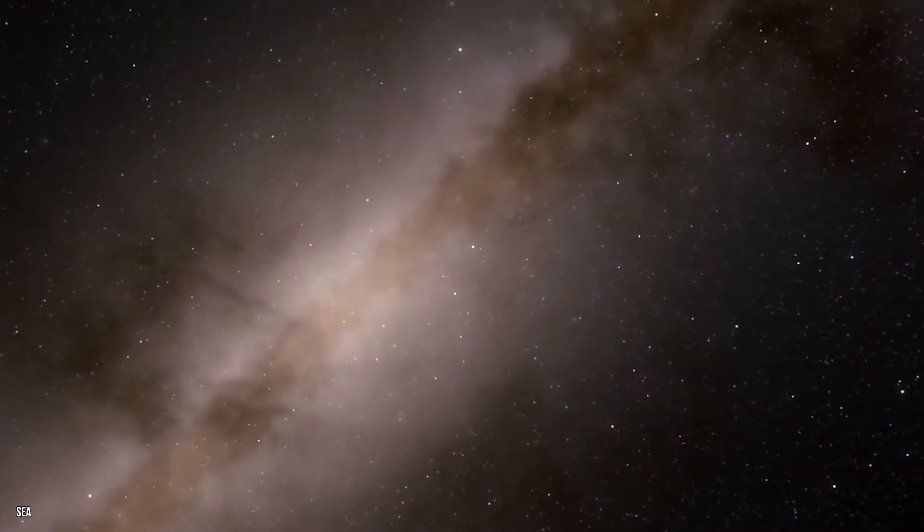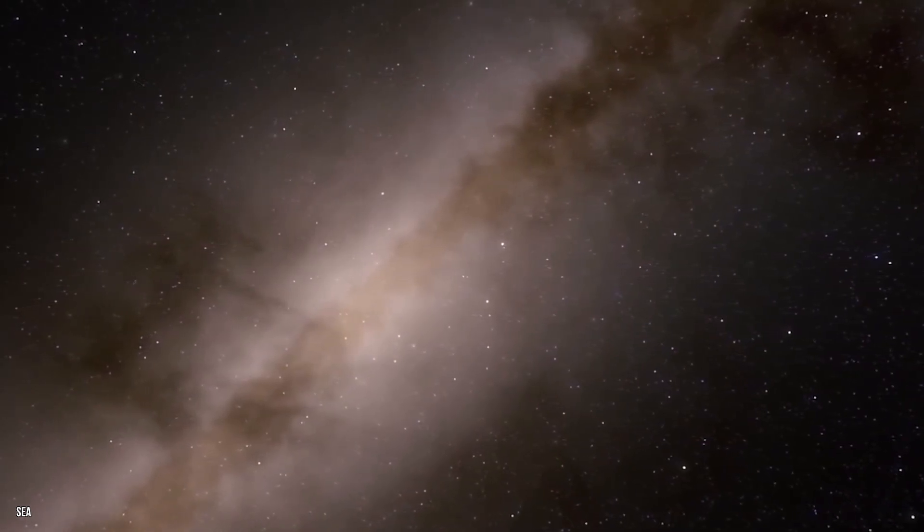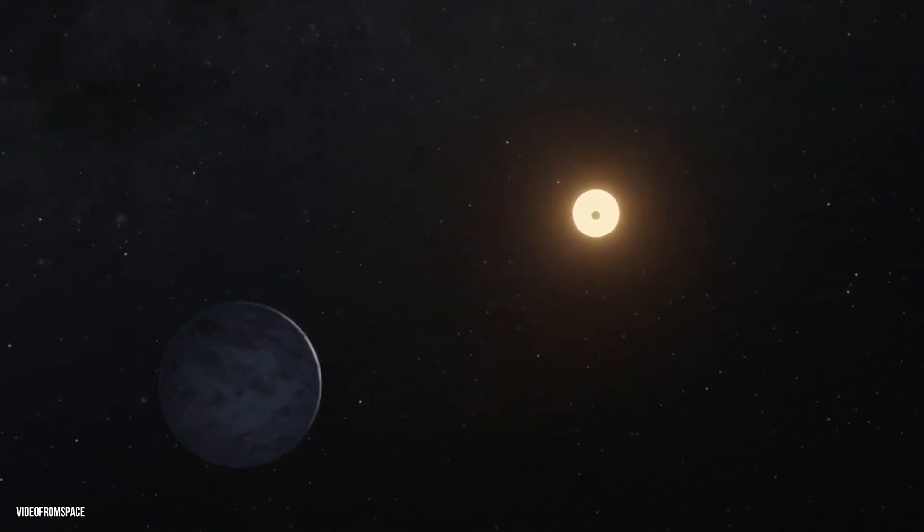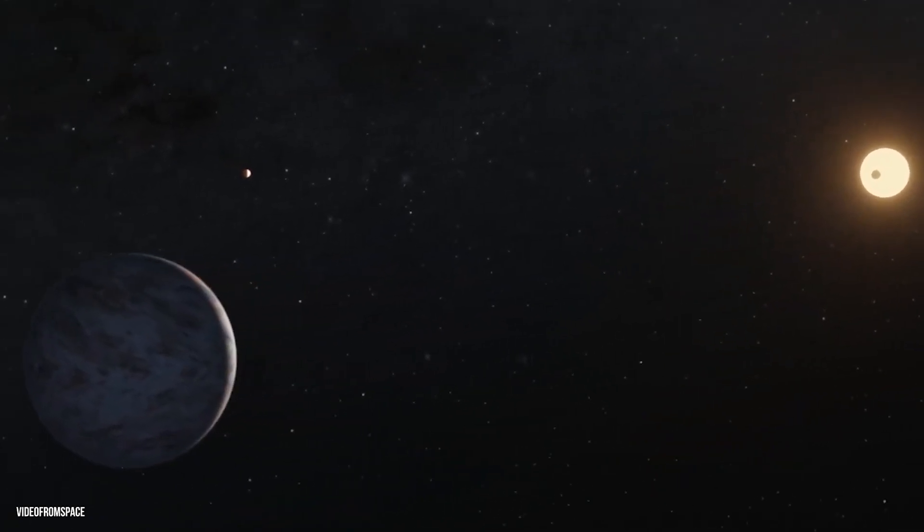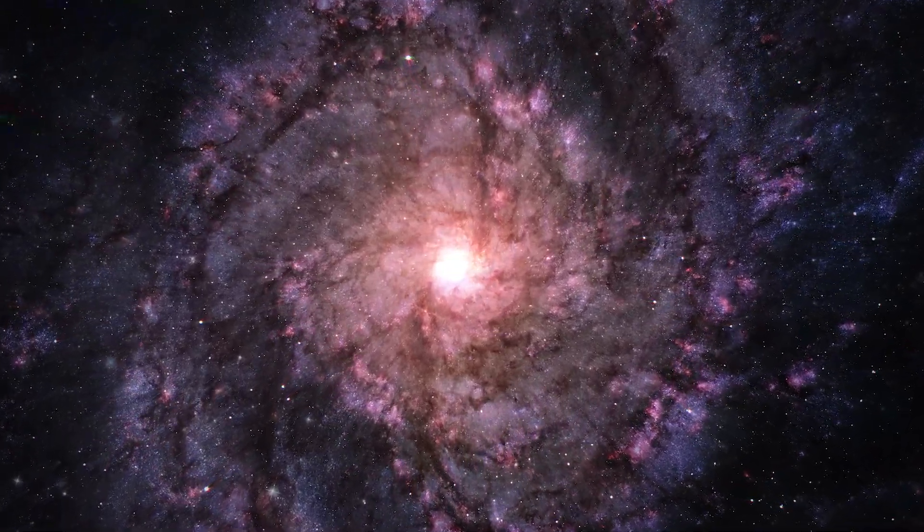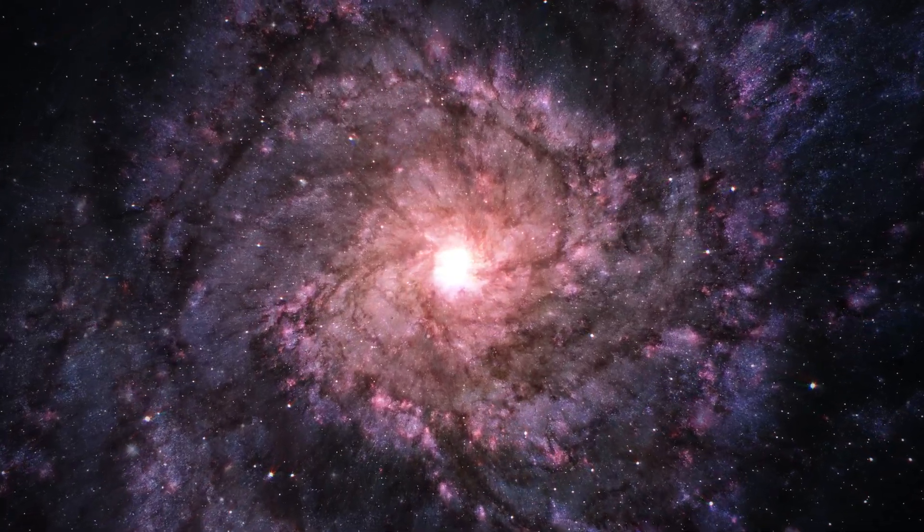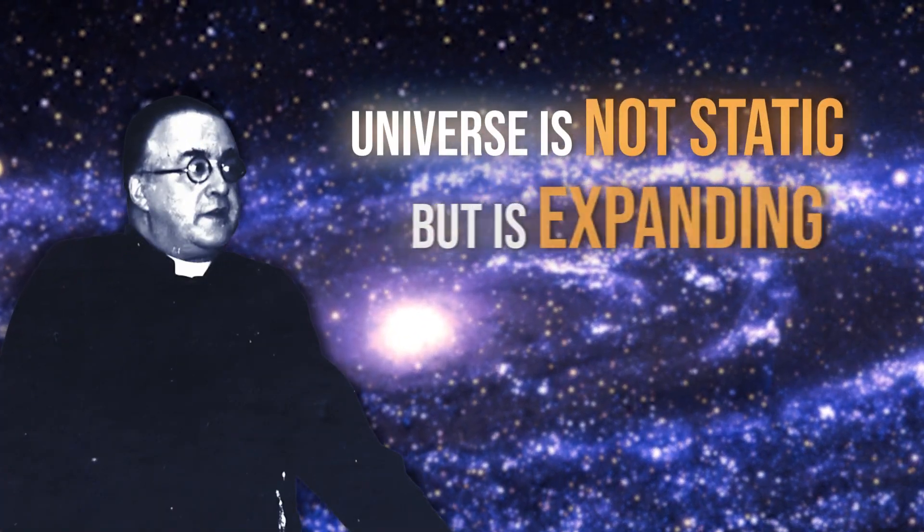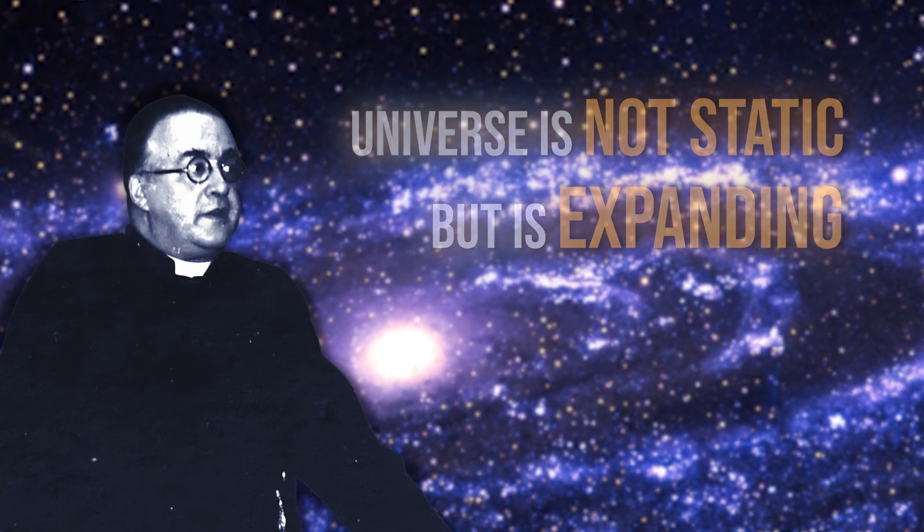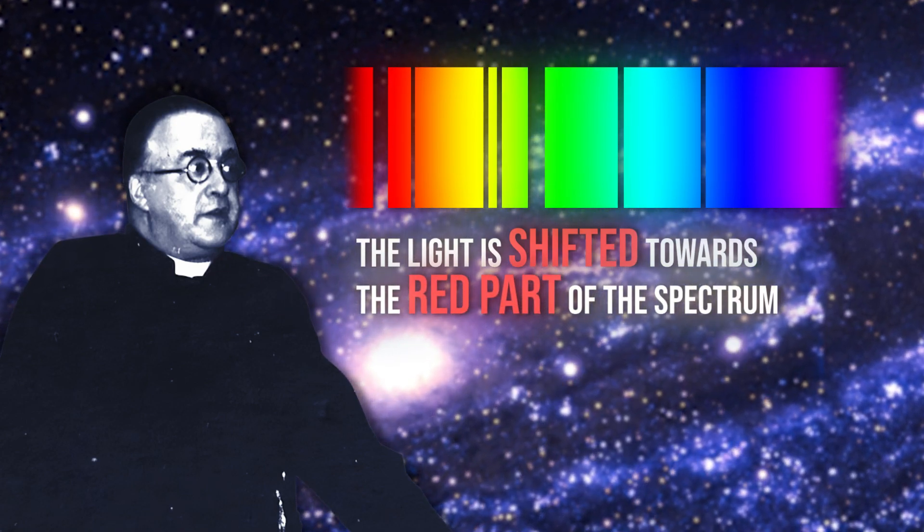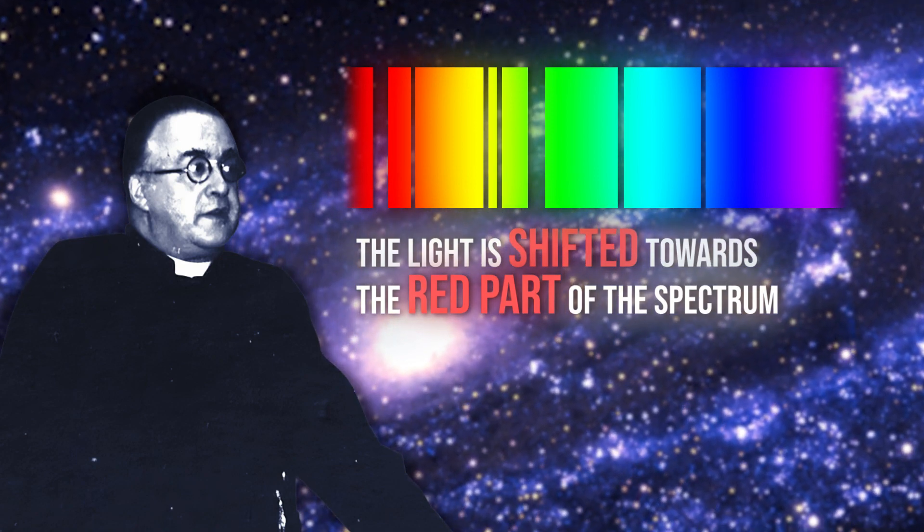For centuries, scientists have been making discoveries that have revolutionized our understanding of the universe. Some of these discoveries have also challenged previously-accepted theories and proved scientists wrong. One such discovery is the expanding universe, which has been a subject of controversy and debate among astronomers for decades. The expanding universe was first proposed by Belgian astronomer Georges Lemaître in 1927. He suggested that the universe is not static, but is expanding, and he based his theory on observations of the redshift of light from distant galaxies. According to Lemaître, this redshift was caused by the movement of galaxies away from each other as the universe expanded.